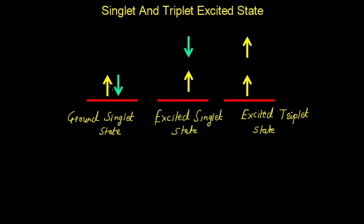In the ground singlet state you can see the pairing of electrons. In the excited singlet state the pairing of electrons is present, but one electron is in the excited state. When we apply an external magnetic field, the orientation of that electron changes — it gains energy and transfers from ground state to excited state. In the excited singlet state the pairing of electrons remains the same, whereas in the excited triplet state electrons are not paired and the spin of those electrons changes.